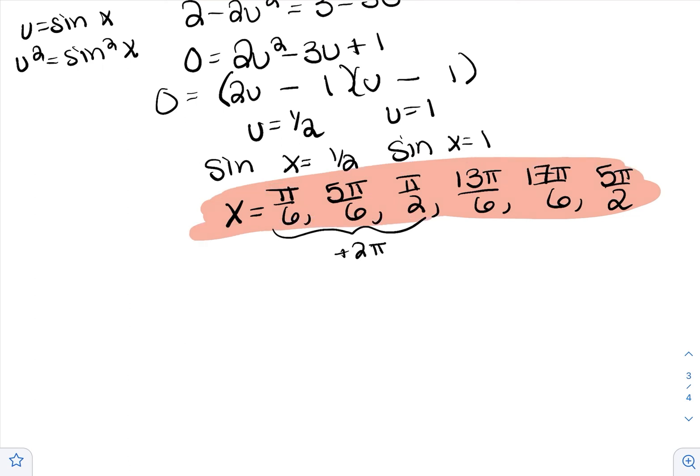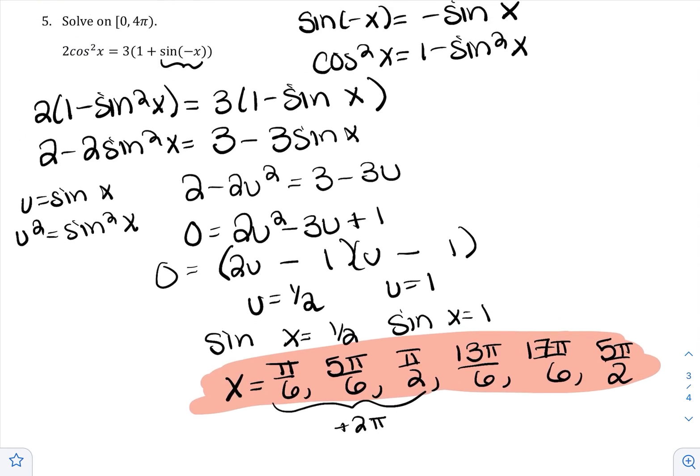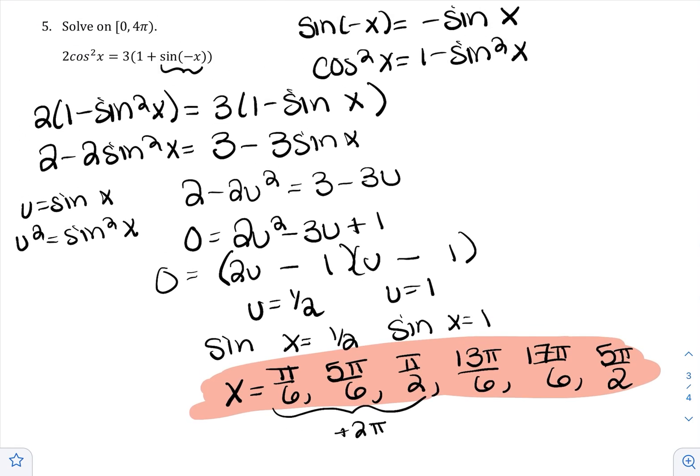The first three solutions are in 0 to 2π, and the second three are in 2π to 4π, giving six angles total in two revolutions. Remember that when you solve an equation, plugging any of those angles into the original equation will make the left-hand side equal the right-hand side.